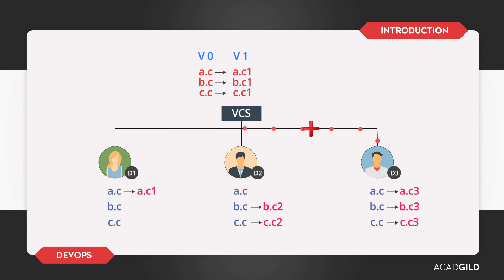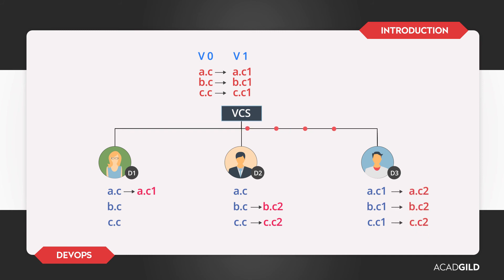Developer 3 is now aware of the changes made by the other developers, so he cannot overwrite their changes or bypass these restrictions. He has no option but to update his work area with the new versions. He downloads AC version 1, BC version 1, and CC version 1, makes changes on top of them, and pushes them back to the version control system. The versions become AC version 2, BC version 2, and CC version 2. You can see the clear history of versions. With the commit command, the version control system also tells who made what change and when. In the history, you can see this change was made by Developer 1 on this date, and this change was made by Developer 3 on that date, with this message. This is called a version control system.